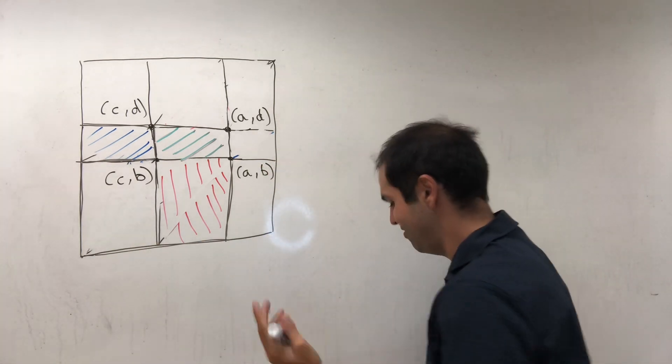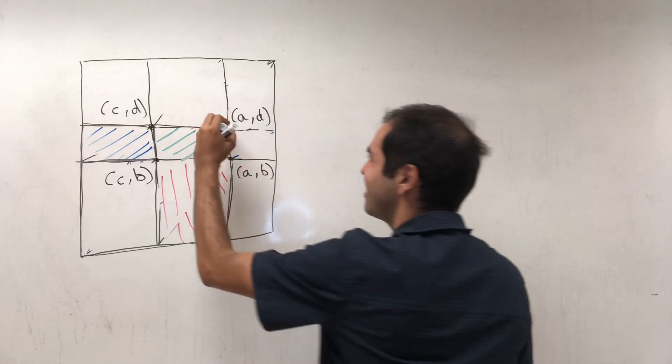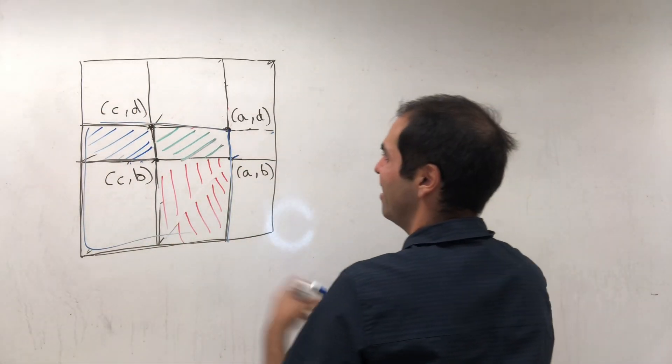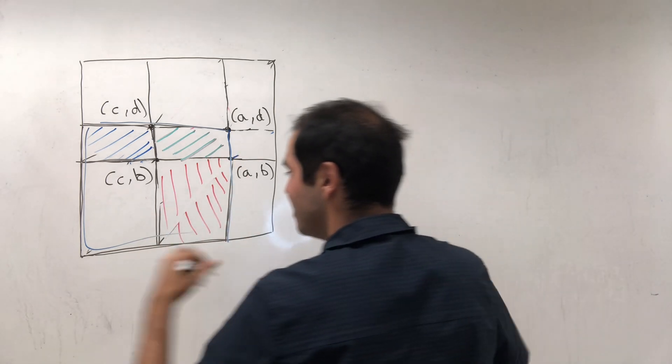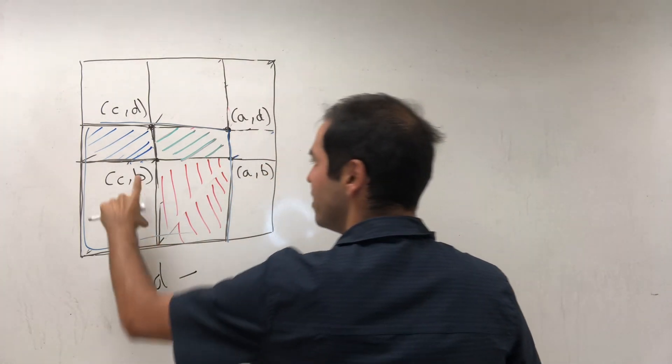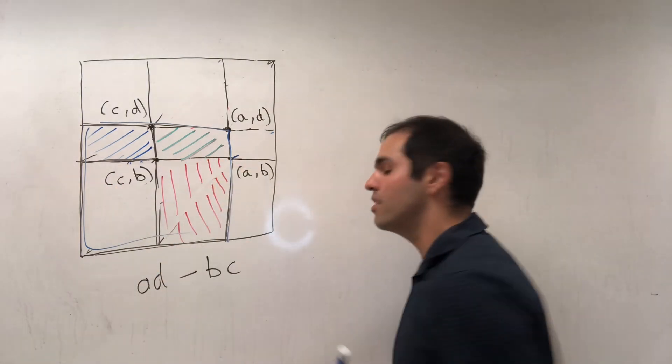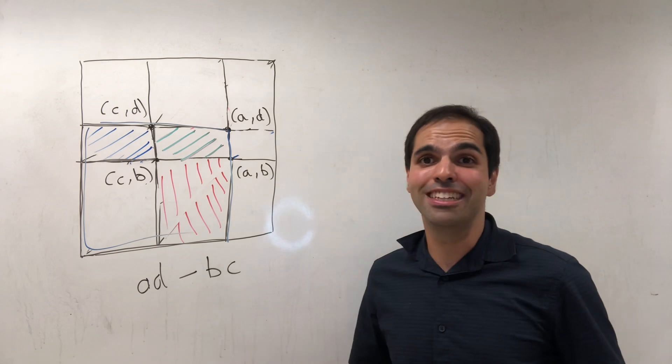And wow, I know it's very exciting! Now what is the area of this rectangle? Well, base is a, height is d, so ad. What is the area of this rectangle? bc. And therefore the determinant is just ad minus bc. How cool is that!